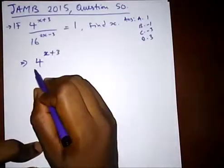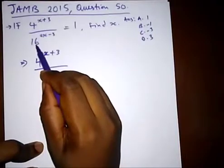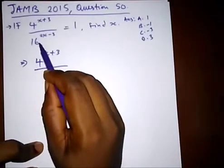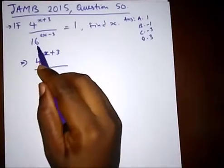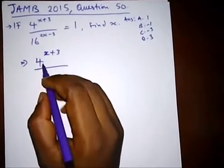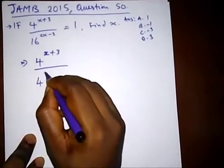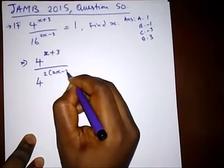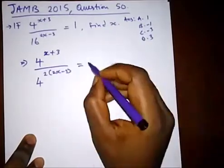This 16. 4 times 4 is 16, so it can be 4 into 2 times. We have 4 raised to power 2 bracket 2x minus 3.